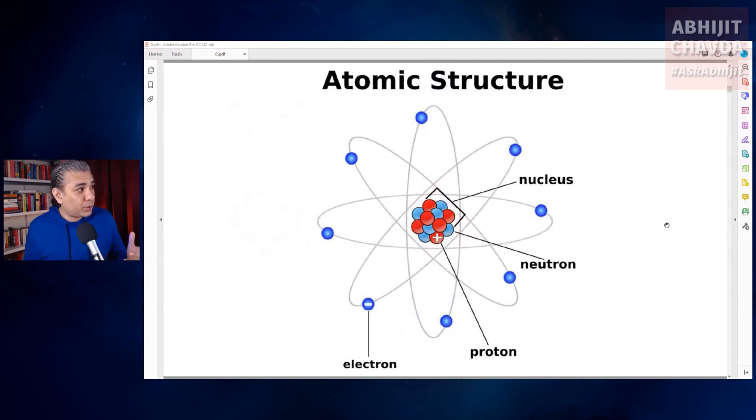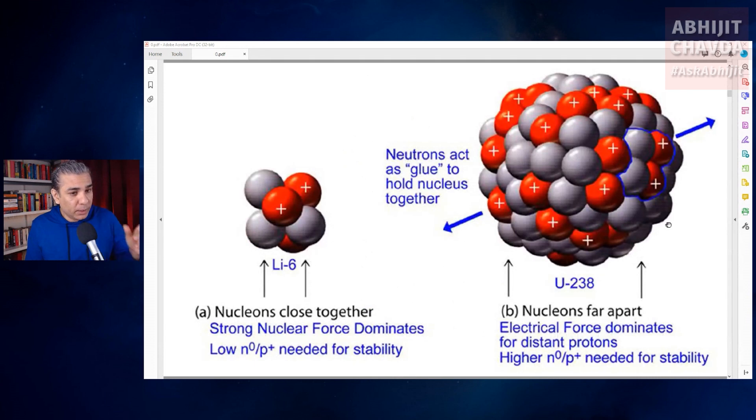Protons and neutrons bind together to form the nucleus of the atom, and the electrons surround and orbit the nucleus. The neutrons act as a nuclear glue to hold the positively charged protons tightly together in the nucleus.